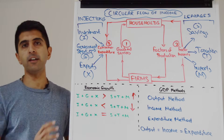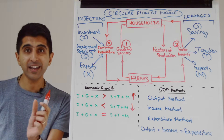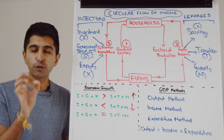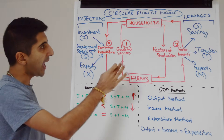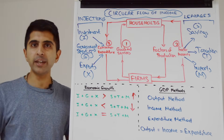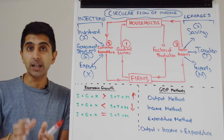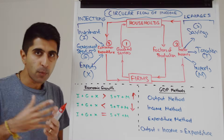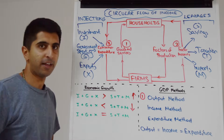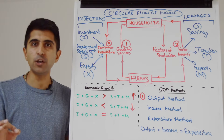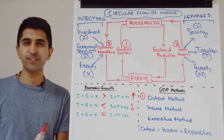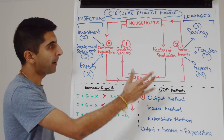We can illustrate economic growth using the circular flow, but we can also get an actual figure for GDP — gross domestic product — our measure of economic growth. If we measure any one of three things in the circular flow, we get a precise number for GDP, and year on year we can see if it's rising or falling. Method one is the output method: looking at the final value of all goods and services produced in an economy in a year.